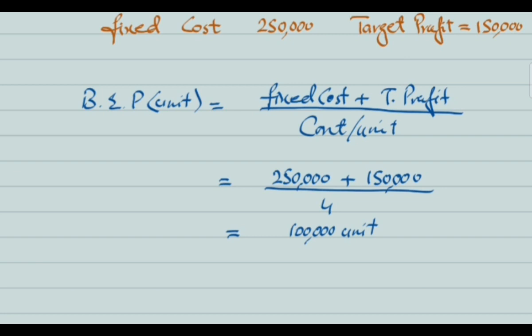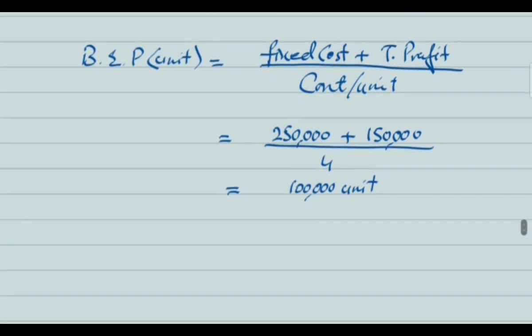Also, if you need to calculate the break-even point in sales revenue under a target profit scenario, sum up fixed cost plus target profit and divide by the CS ratio.